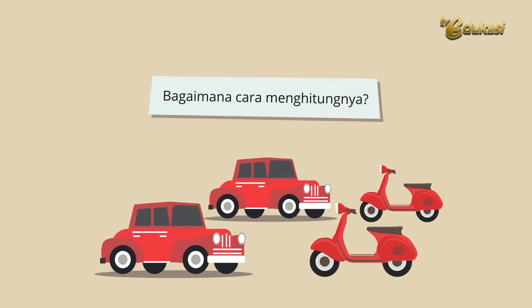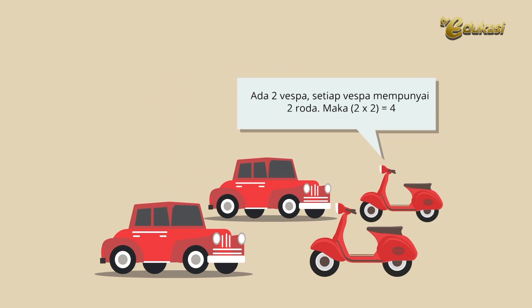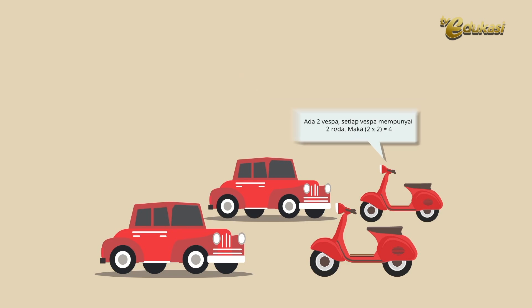Bagaimana cara menghitungnya? Ada 2 Vespa, setiap Vespa mempunyai 2 roda. Maka, (2×2) sama dengan 4.